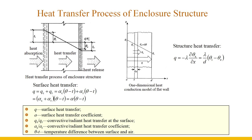Heat transfer through the building envelope includes three processes: surface heat absorption, structural heat transfer, and surface heat release. Each process is actually a comprehensive combination of the three basic heat transfer methods. The solid material layer is mainly for thermal conduction, and the air layer is mainly for radiation heat transfer. Heat absorption and heat release are collectively referred to as surface heat transfer, in which convection and thermal conduction are difficult to study separately and are generally considered as convective heat exchange. Therefore, surface heat transfer equals the sum of the convective heat transfer and the radiation heat transfer.